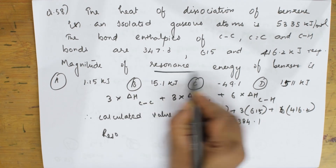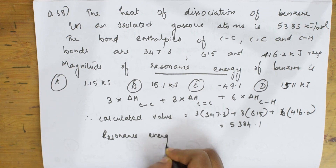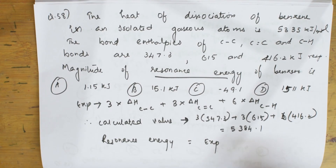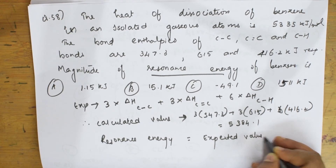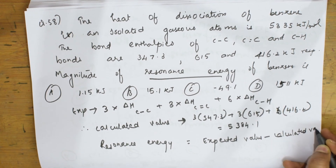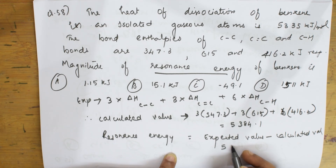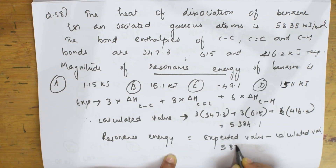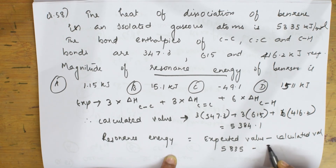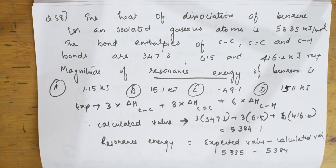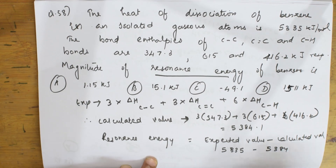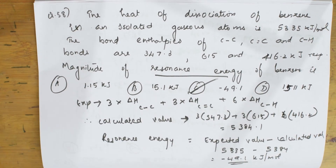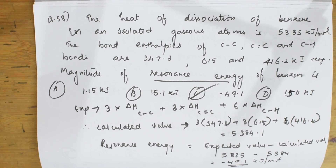Resonance energy is expected value minus calculated value. The expected value (given) is 5,335 and the calculated value is 5,384.1. So resonance energy = 5,335 − 5,384.1 = −49.1 kJ/mol. The correct answer is 49.1 kJ/mol. Resonance energy is always expected value minus the calculated value.